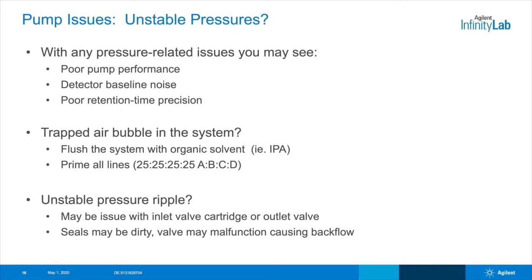Prime all of the lines — you can use 25% on all of the channels. Another consideration for pressure fluctuations is that your inlet or outlet check valve may have a minor internal leak or have backflow due to overuse. Seals may also be dirty or worn. You want to replace these one by one and check if they resolve your pump issues. You can also use diagnostic tools, like LabAdvisor, to run a diagnostic leak test that can help indicate which valve is malfunctioning.